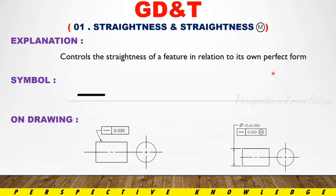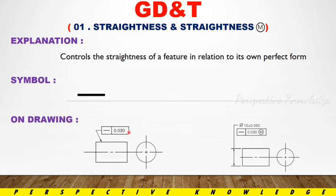The straightness symbol is a straight line. This is the straightness symbol on an engineering drawing. In the feature control frame you can see all the details — the straightness symbol, the straight line symbol, and the specification value of 0.03 as the straightness tolerance value.